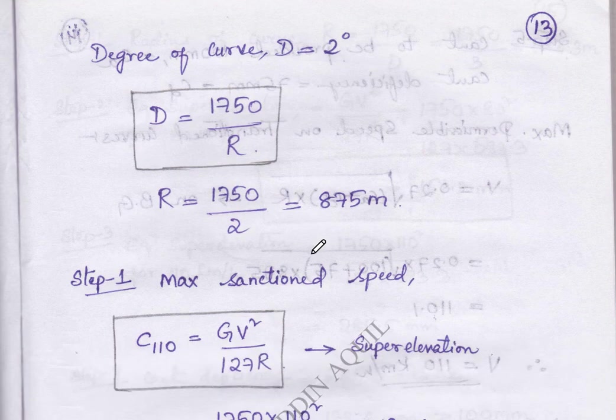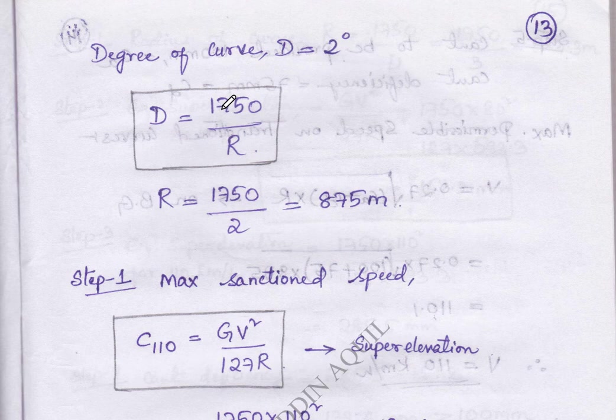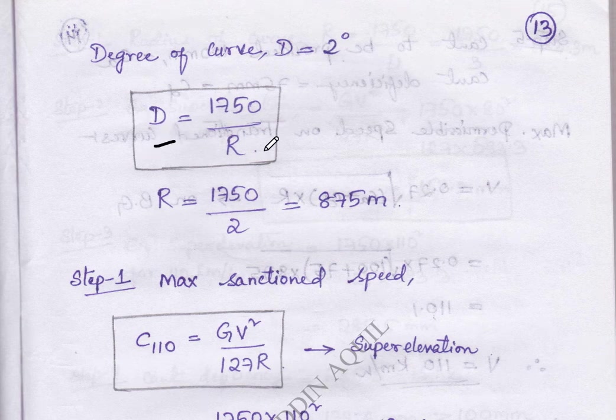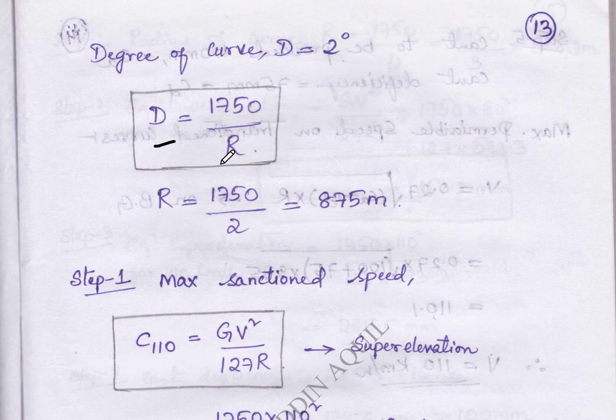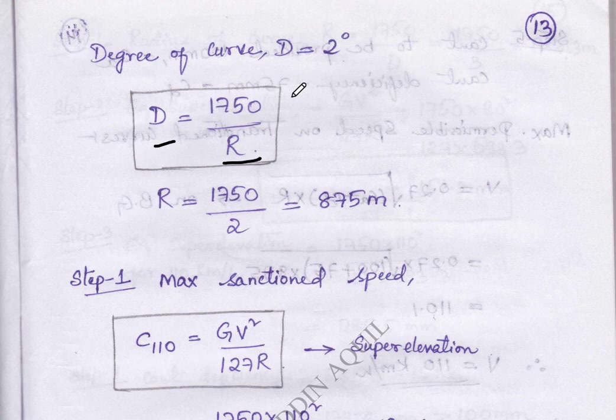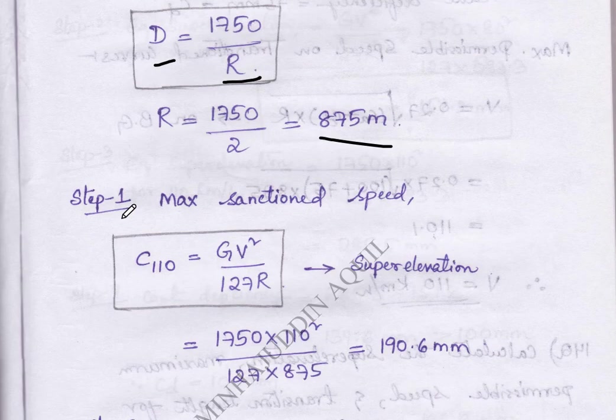Next is degree of curve which is given as 2 degrees. Therefore, we are using the formula D equal to 1750 by R. Capital R can be calculated by substituting the value of D. This is 875 meters.